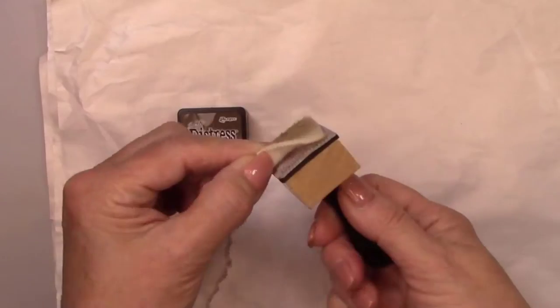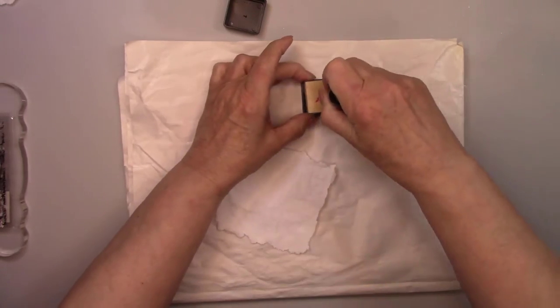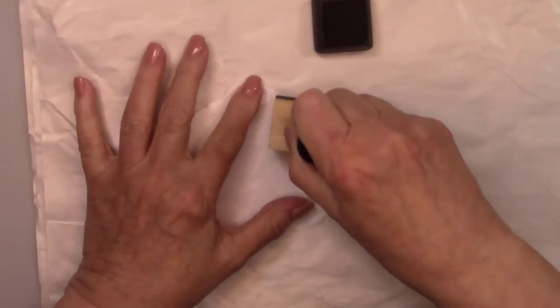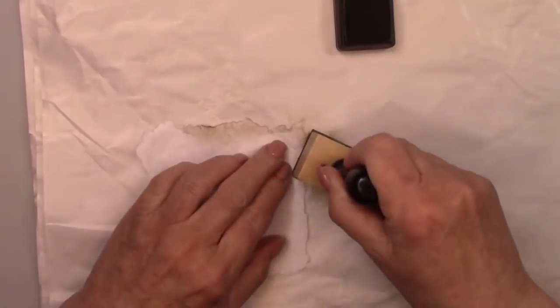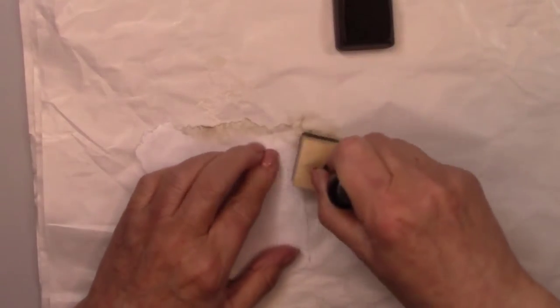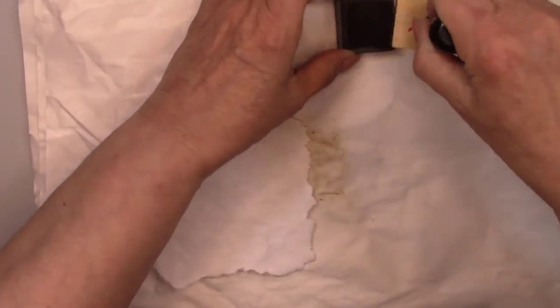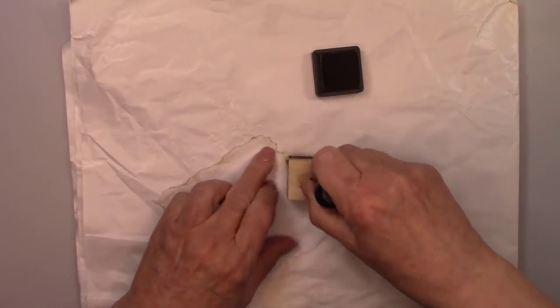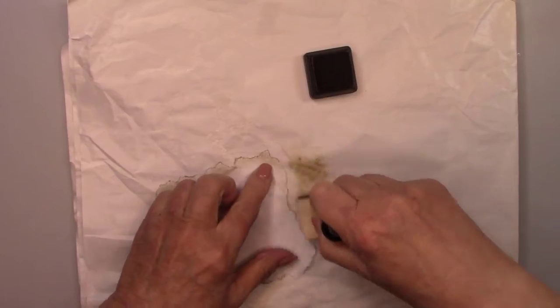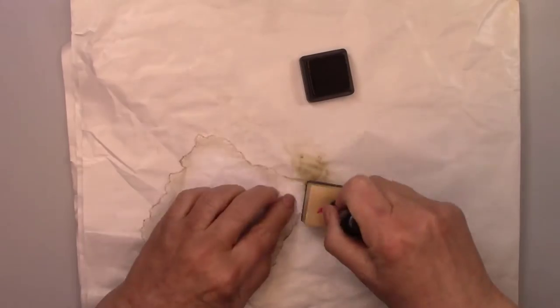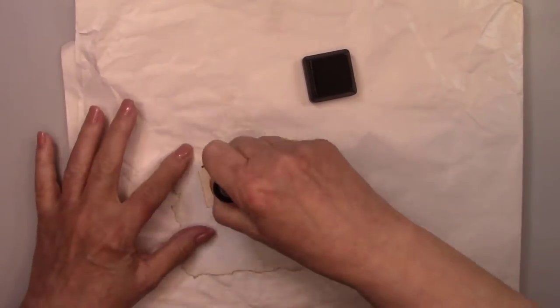It's time to age the edges of this paper. In this first technique, I'm using Tim Holtz Distress Ink and a Tim Holtz Dauber. You just put a piece of felt on the dauber, then you rub it in the ink and using a circular motion, go around all the edges of the paper. Make sure you let the paper dry before you move on to this step. Don't forget, watch this video to the very end to see how to make a vintage bow. Just a little bit in the center, too.